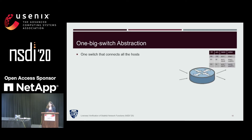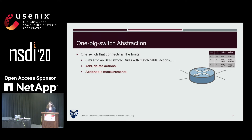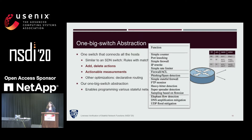The one big switch abstraction is a unified abstraction for both control plane and data plane that connects all hosts and conceptually handles every packet. It is very similar to an SDN switch with a set of rules, each having a match field, action field, and priority. To enable programming stateful network functions, we augment this abstraction in two dimensions: we allow rules to be updated by add and delete actions, and we allow actionable measurements where rules collect traffic statistics and act upon packets based on those statistics. We also apply optimizations such as declarative routing. Our augmented abstraction enables programming a variety of network functions such as firewall and UDP flood mitigation.